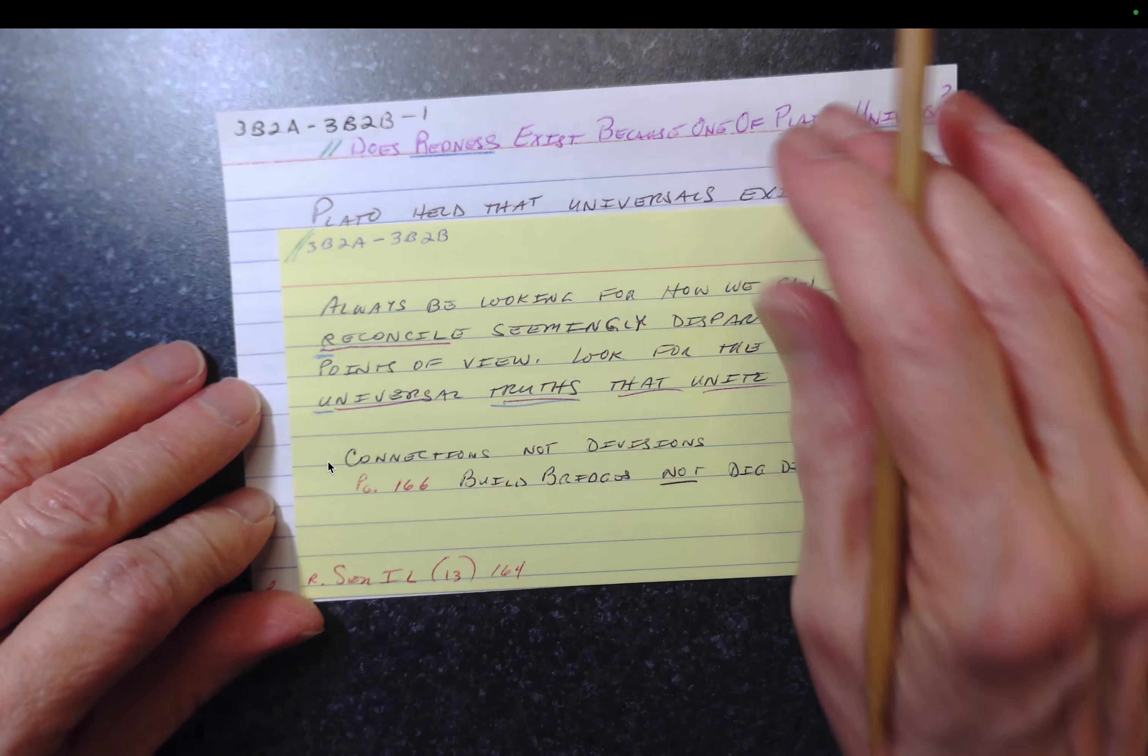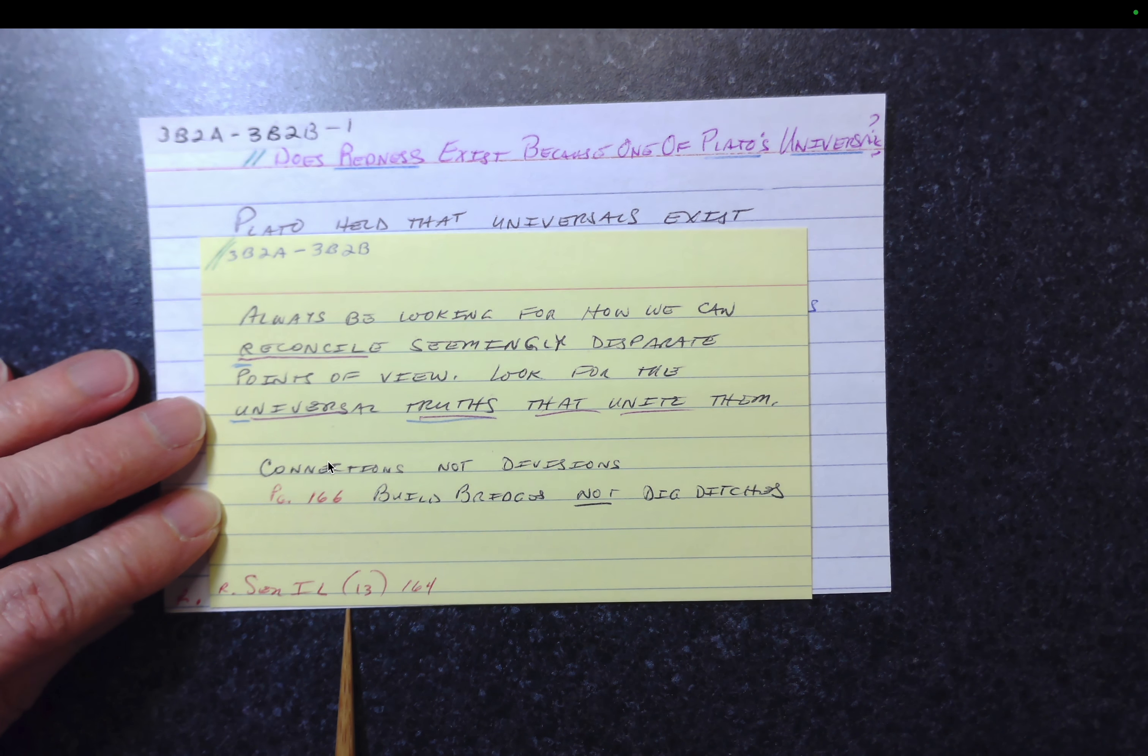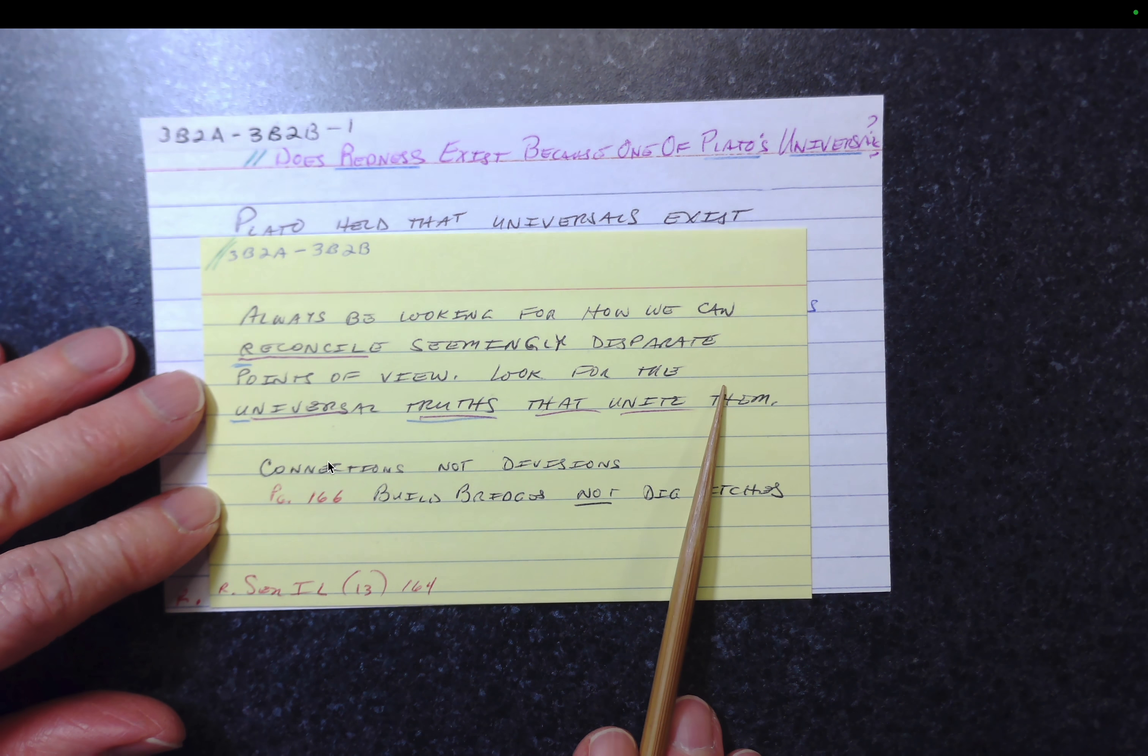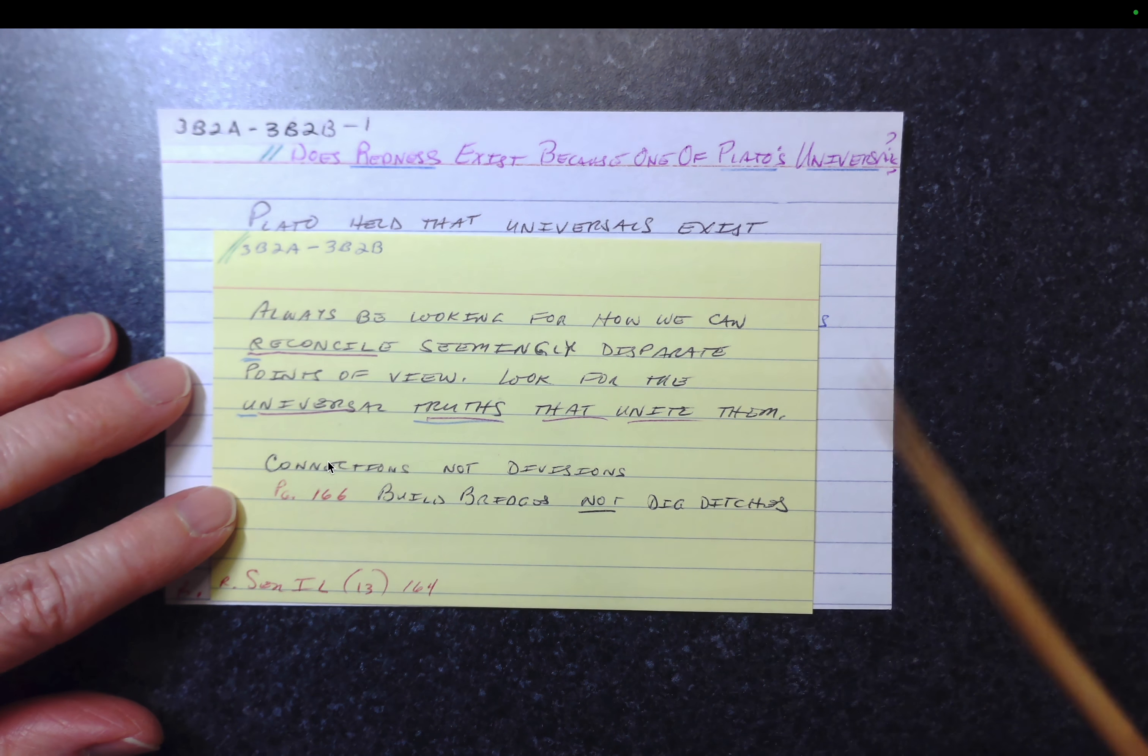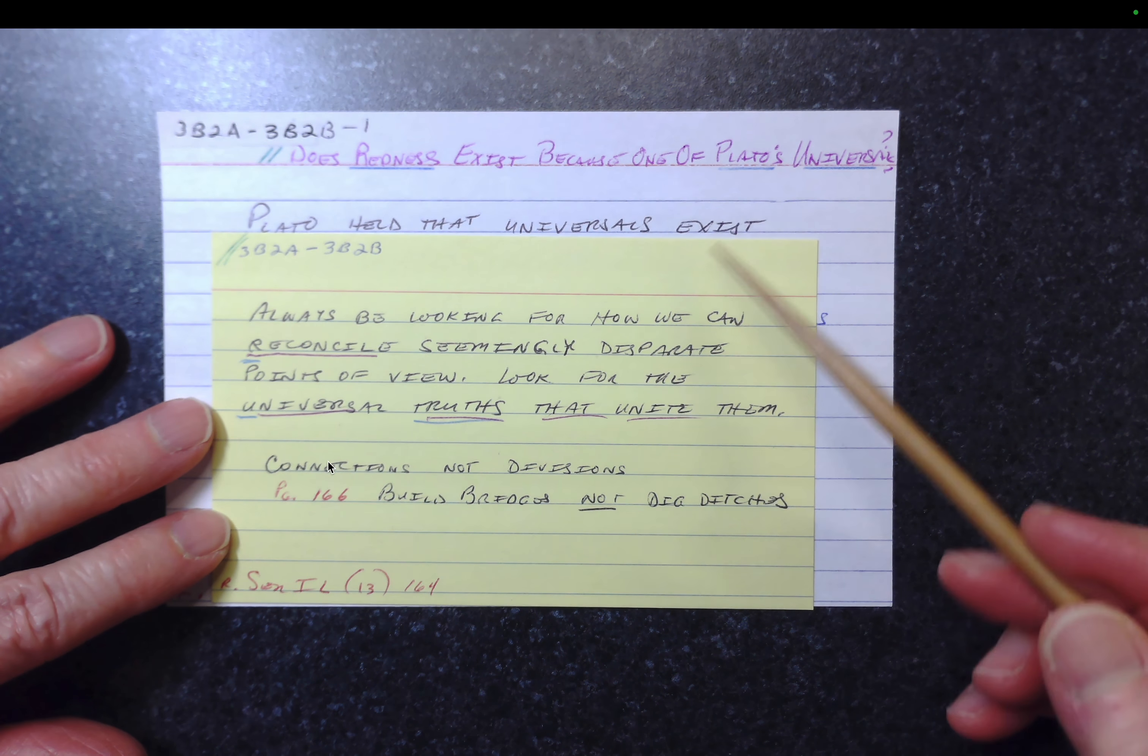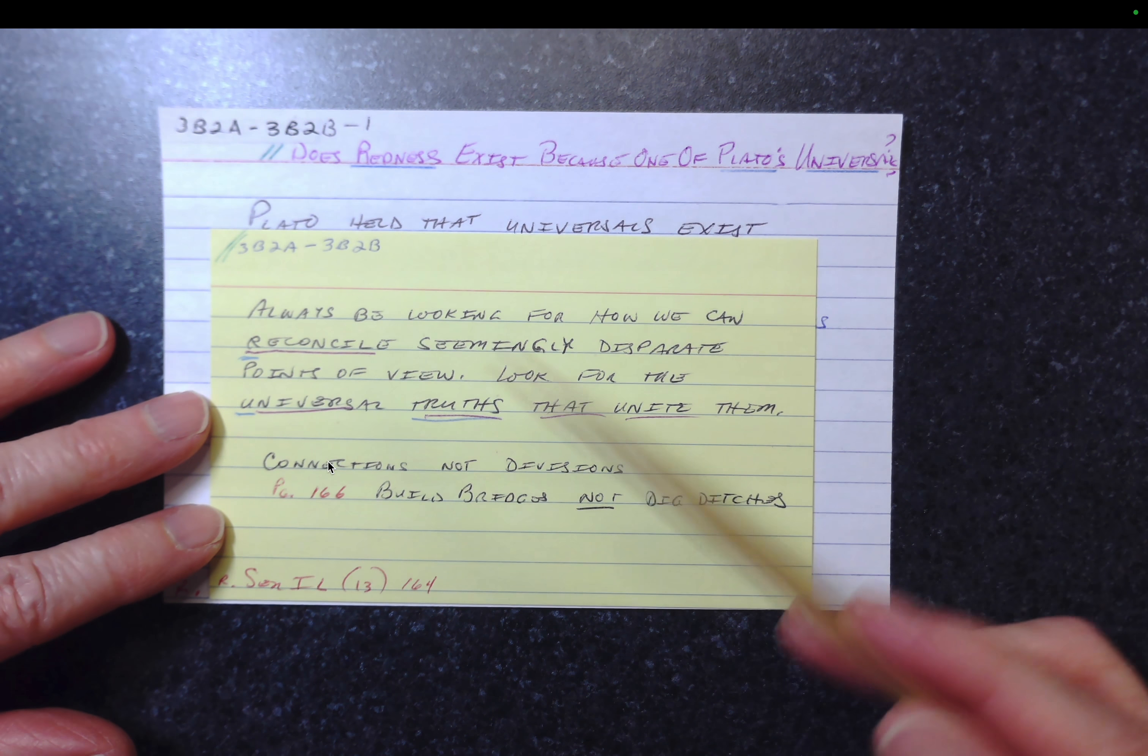Well, here's the parent that this card chose. And this is an older card, which you can tell because it's three by five, and it doesn't fit my normal scheme. That's from Serta Langes. And he says, always be looking for how we can reconcile seemingly disparate points of view. Look for the universal truths that unite them. And because this is a universals and a universal that's about as close as I could come.